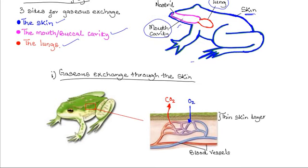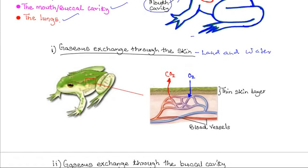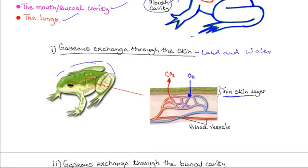Gas exchange through the skin occurs both on land and in water. The skin of the frog presents a very large surface area, which makes it very efficient for gas exchange. In addition, it consists of a very thin layer to facilitate rapid gas exchange. Beneath the thin layer there is a dense network of blood capillaries which maintains a steep diffusion gradient. The skin is kept moist at all times by mucus that is secreted by glands in the skin.